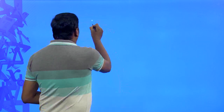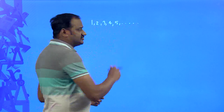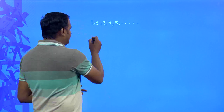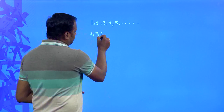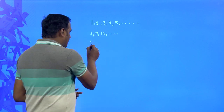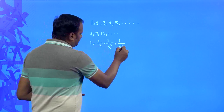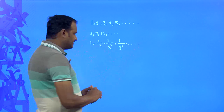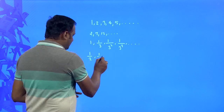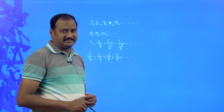We have some sequences like 1, 2, 3, 4, 5 and so on. Another sequence like 2, 7, 12 and so on. Then 1, 1/3, 1/3², 1/3³ and so on. Another sequence like 1/2, 1/3, 1/4, 1/5 and so on. These are all particular sequences.